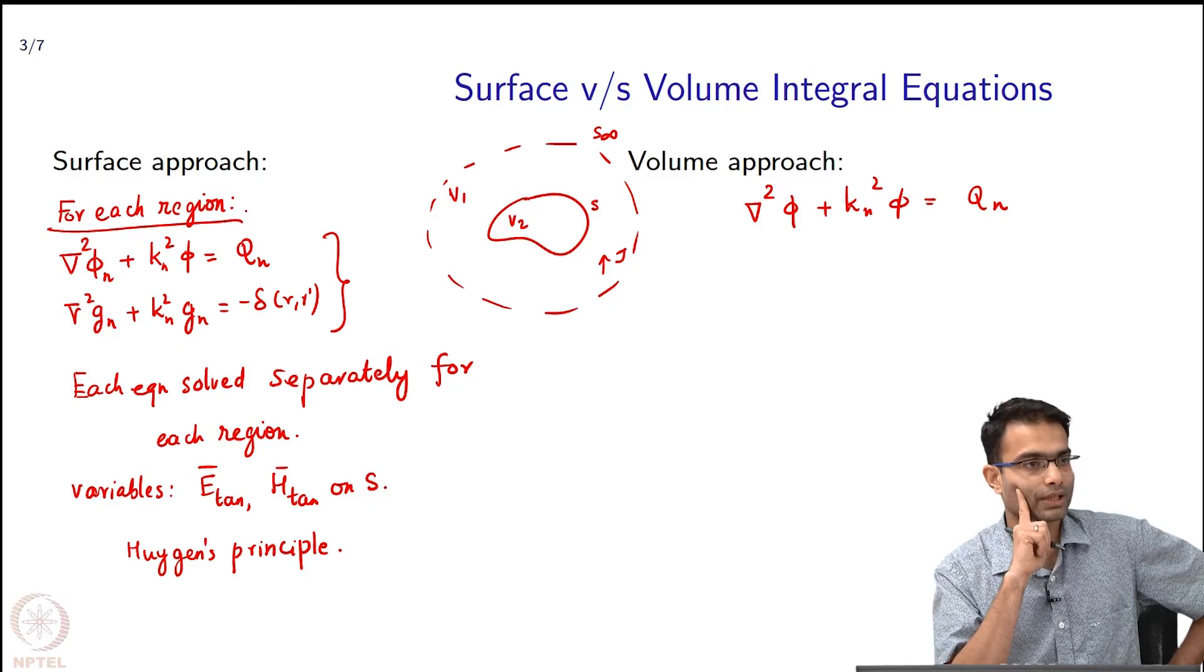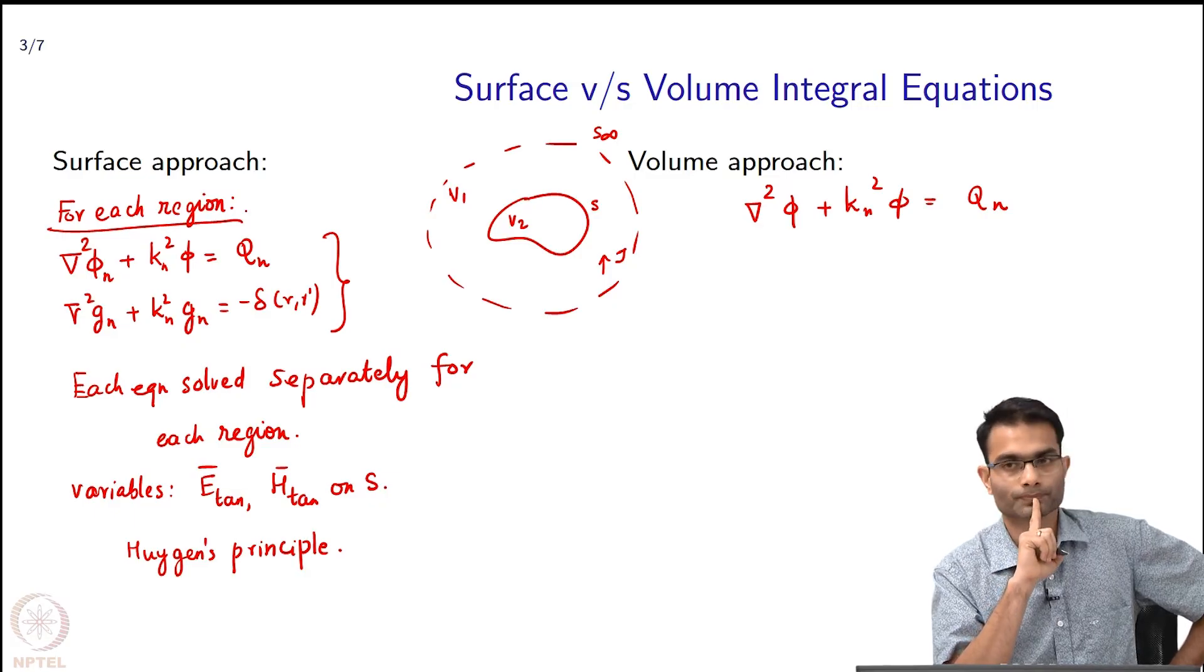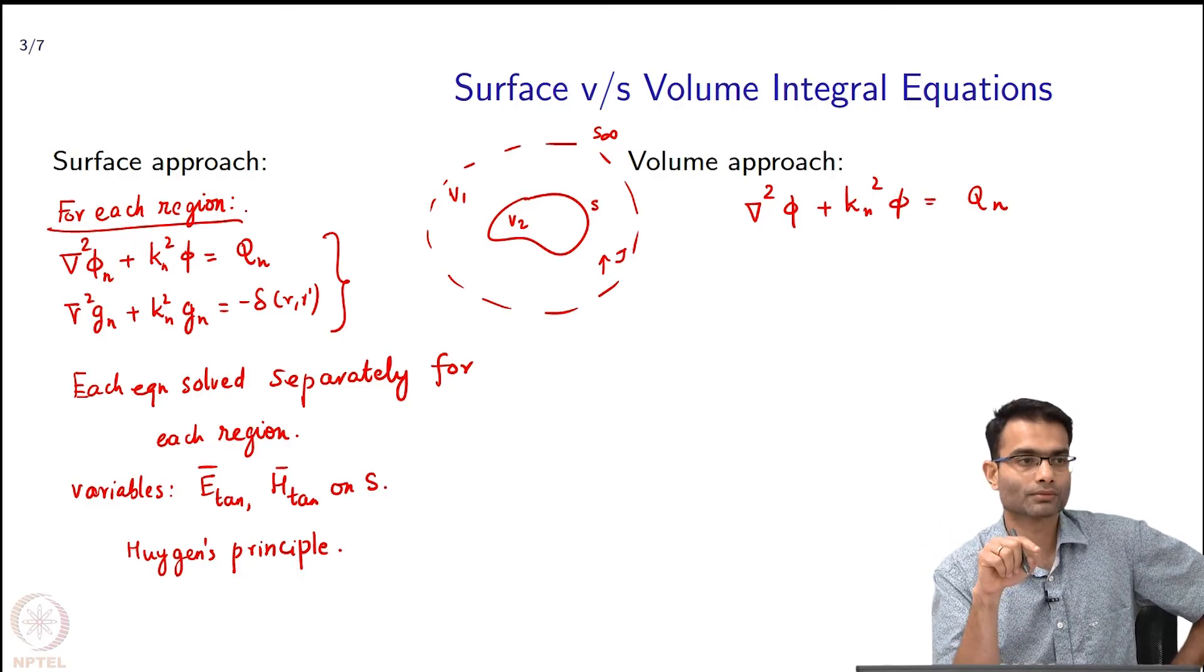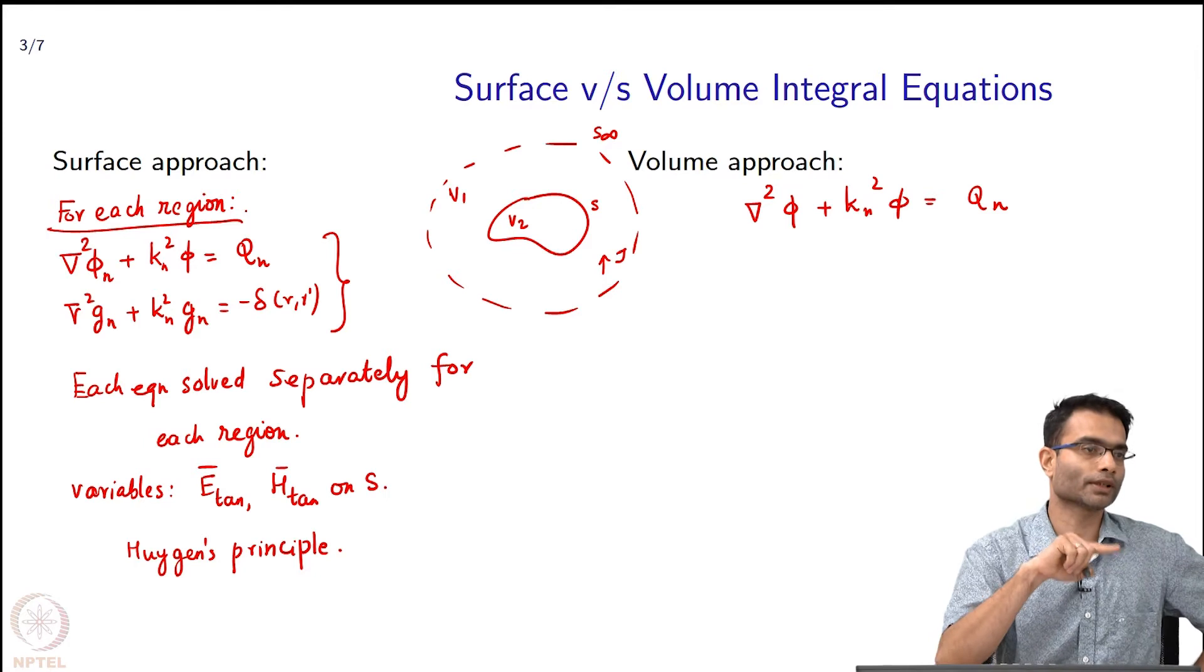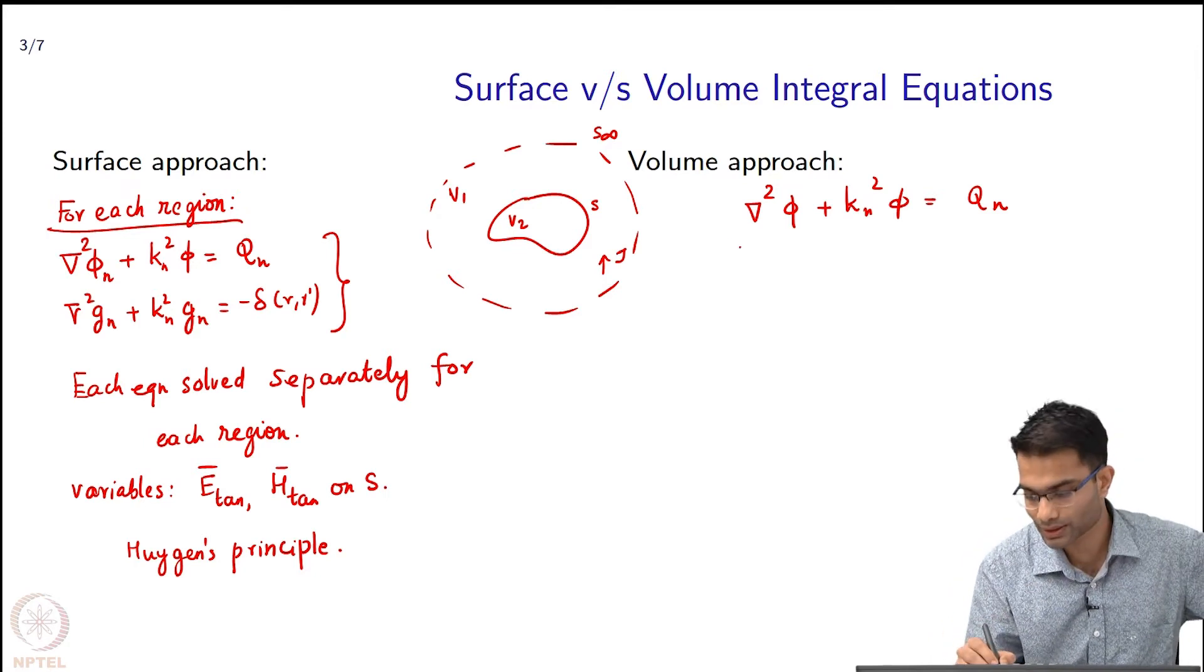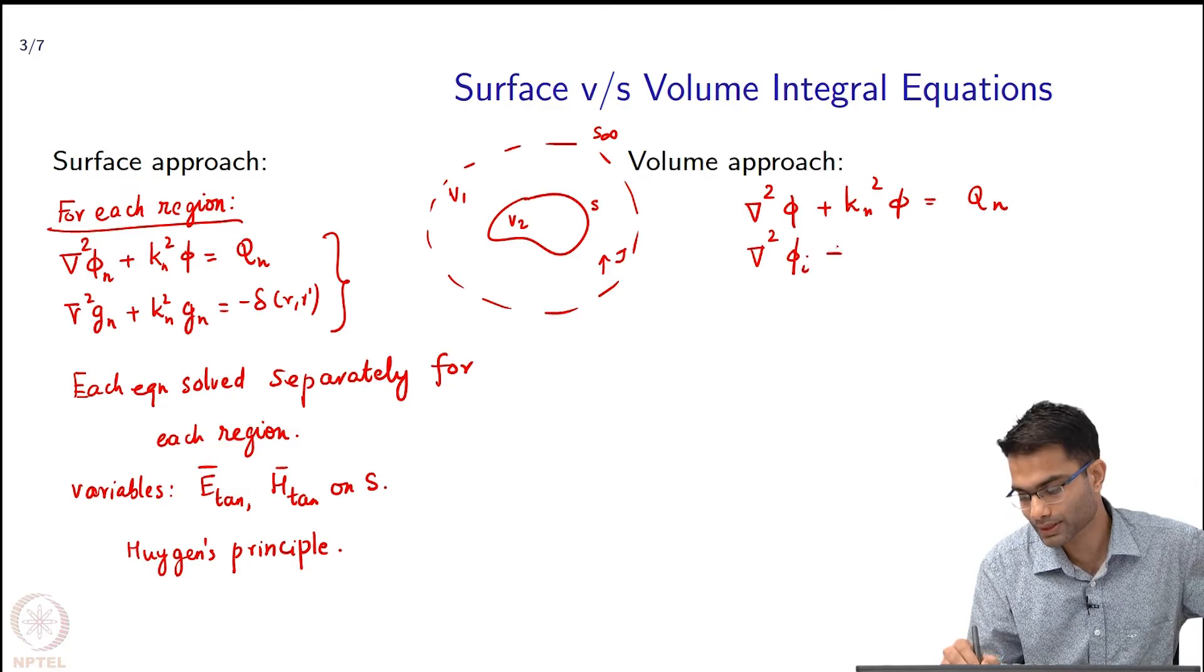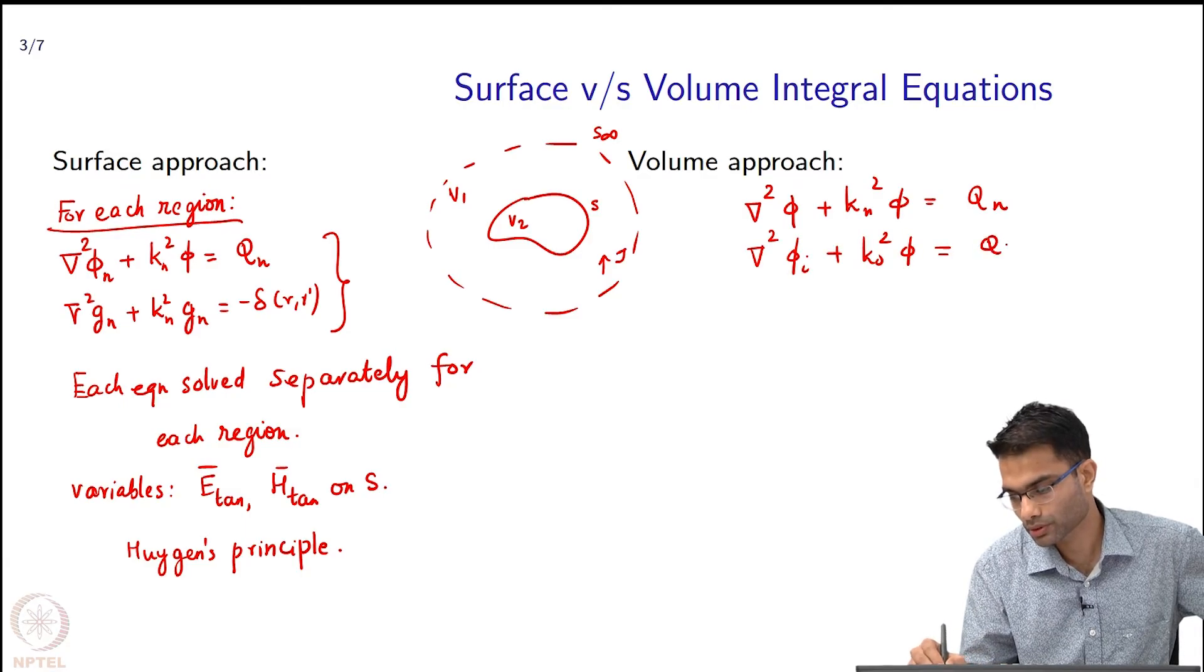What was the starting point itself? It became slightly different. What were the two cases? We said with and without the object. We did not consider volume 1 and then volume 2, we considered with and without object. That became ∇²φᵢ + k₀²φ is equal to qₙ, with and without object. Then what did I do?